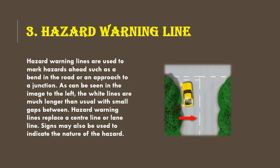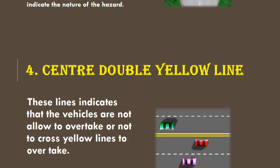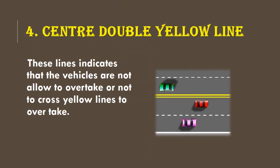Fourth is center double yellow line. This means that you can't overtake. You can see that there are four lines of road and the red car is not overtaking. The yellow line cannot be crossed. This means that if you're on the street in town, you don't cross the yellow line.